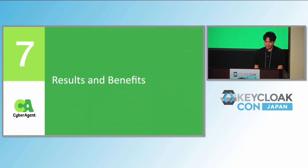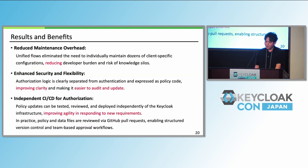Results and benefits: Reduced maintenance overhead — thanks to unified flows, we reduced maintenance costs and avoided knowledge silos. Enhanced security and flexibility — authorization logic is now clearly separated, easier to audit, and safe to update. Independent CI/CD for authorization — most importantly, a policy change can be deployed via GitHub without touching Keycloak itself. This gives us agility and control.